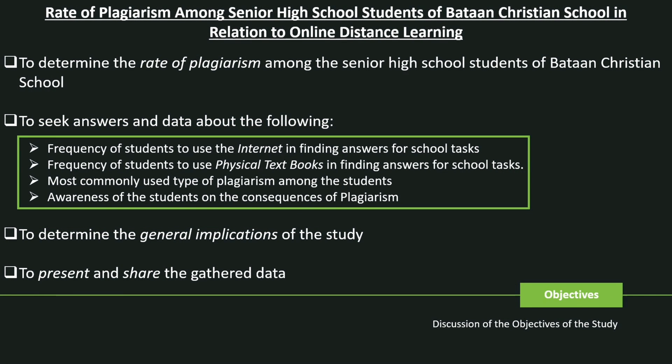Next, I would be discussing the objectives of the study. First and foremost is to determine the rate of plagiarism among the senior high school students of Bataan Christian School. Next is to seek answers and data about the following: frequency of students to use the internet in finding answers for school tasks, frequency of students to use physical textbooks in finding answers for school tasks, the most commonly used type of plagiarism, and the awareness of the students on the consequences of plagiarism.